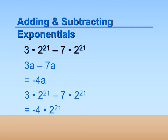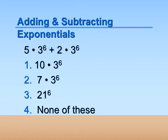You are just adding the coefficients. 3 minus 7 is negative 4, so negative 4 times 2 to the 21st power. Another example: what is 5 times 3 to the 6th plus 2 times 3 to the 6th? We have 5 of them and 2 of them, so altogether we have 7 of them. The answer is 7 times 3 to the 6th.